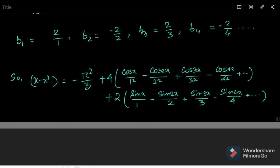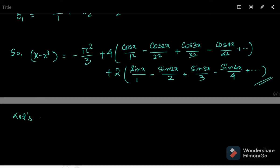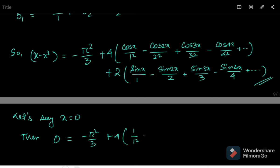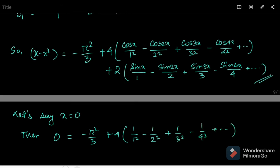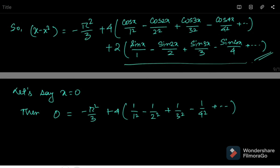Now let's set x = 0. Then 0 = minus π²/3 plus 4 times [1/1² minus 1/2² plus 1/3² minus 1/4² and so on], since cos(0) = 1 for all terms. Rearranging, we get π²/12 = 1/1² minus 1/2² plus 1/3² minus 1/4² and so on. This proves the result.